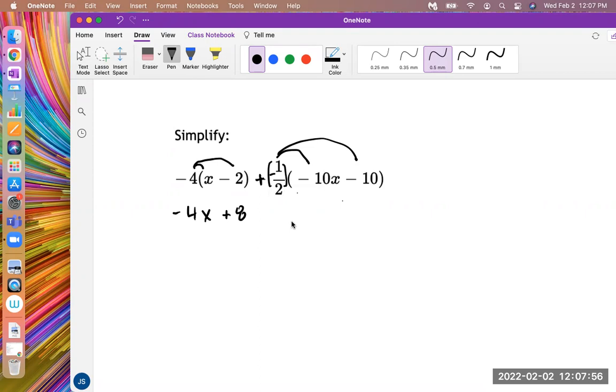The mistake that I see students do with this type of problem is they accidentally do both. We have only one negative sign here. So we can either apply this as negative one half times by negative 10, which would be positive, and then negative one half times by negative 10 would be positive. We can apply that negative sign when we distribute.